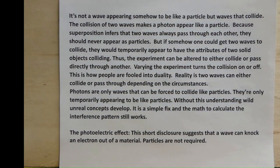It's not a wave appearing somehow to be a particle, but waves that collide. The collision of two waves makes a photon appear like a particle. Because superposition infers that two waves always pass through each other, they should never appear as particles. But if somehow one could get two waves to collide, they would temporarily appear to have the attributes of two solid objects colliding. Thus, the experiment can be altered to either collide or pass directly through another. Varying the experiment turns the collisions on or off. This is how people are fooled into duality.